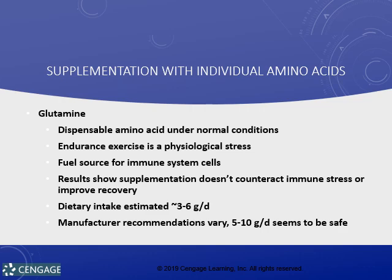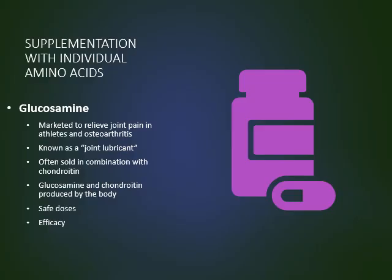Glutamine is an amino acid that the body can make — it is dispensable and therefore non-essential. Endurance exercise is a physiological stress, and exercise has been shown to reduce glutamine levels. Glutamine is needed for immune system function and is an important fuel for immune cells. The dietary intake estimated to be safe is 3 to 6 grams per day. Glucosamine and chondroitin are touted as joint pain relievers and inflammation reducers — some individuals find them effective, however research has not shown them to help people with osteoarthritis.